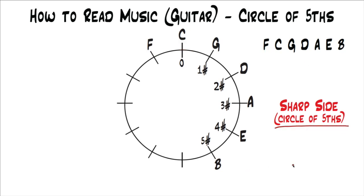This sharp side is called the circle of fifths because every one of these letters is moving in fifths. If you started on F and went to C, that's a fifth away. From C to G is a fifth, all the way to B. If you count F, G, A, B, C on your hand, that's five. C, D, E, F, G — that's five. G, A, B, C, D — that's five. They're all fifths away from each other, which is why it's called the circle of fifths.